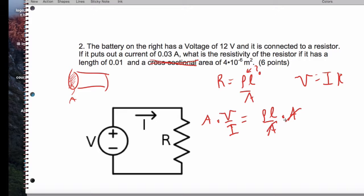Okay, so I'll multiply by A and I'll divide by L. So I end up getting that the resistivity is V times A over L times I.